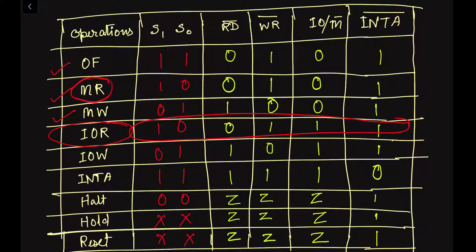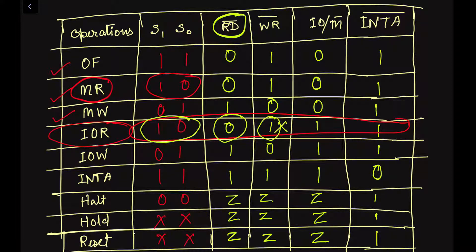These are the signal values for the input-output read machine cycle. As it is a read operation, similar to the memory read operation, the status signals will be 1 and 0. The read-bar signal is active low, so it will have a zero value. The write-bar signal will be one because this is not a write operation. Since our operation is concerned with the input-output device and the IO/M-bar signal is active high, it will have a value of one.